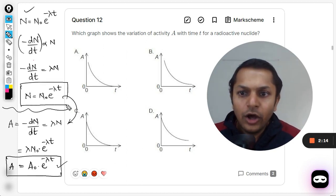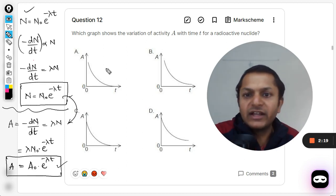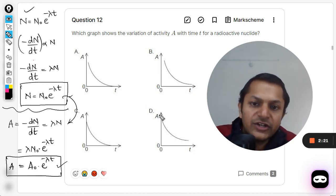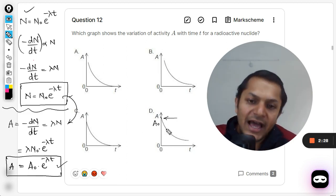You can see that both this and the radioactive decay law are having exponential variation. So we can see here, D should be the correct answer. Why? Because it will be touching the y-axis at some certain point - this is the initial point, that is A₀, and it is moving according to the exponential behavior.